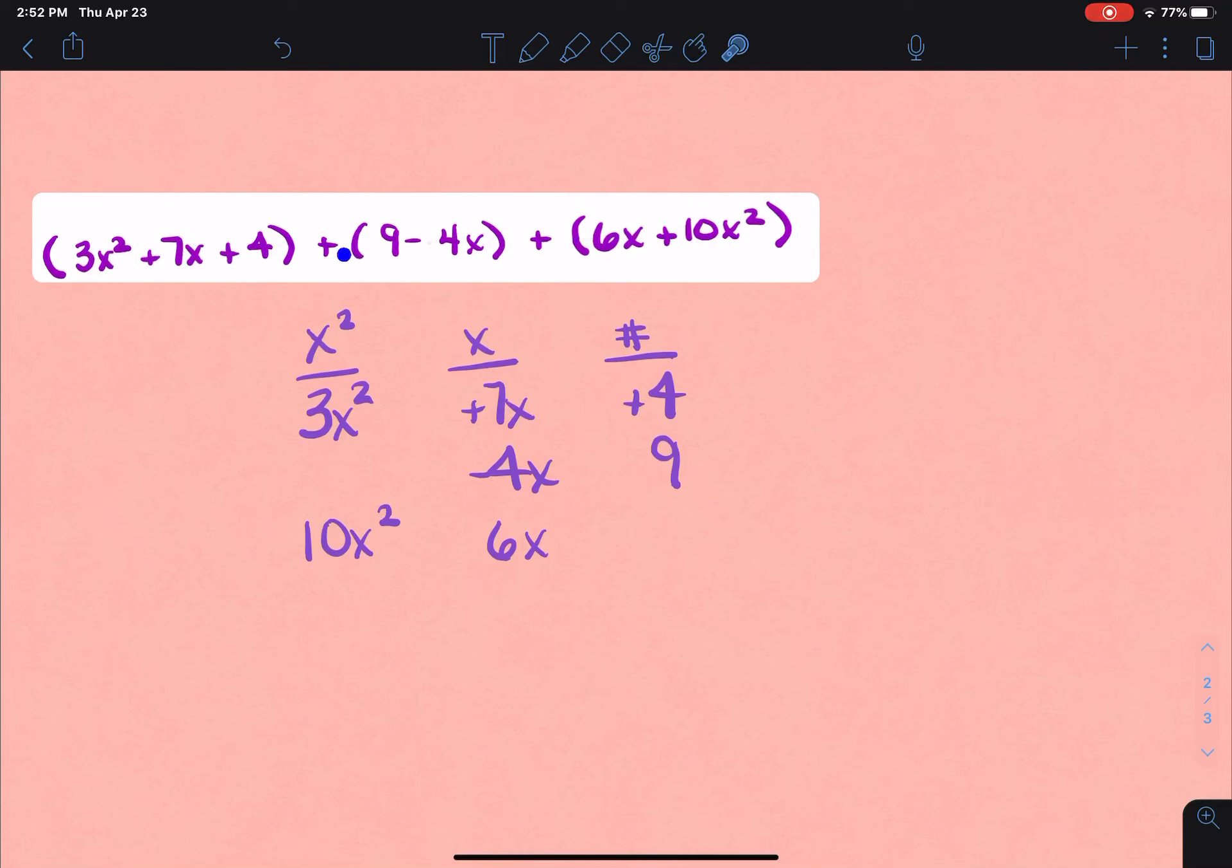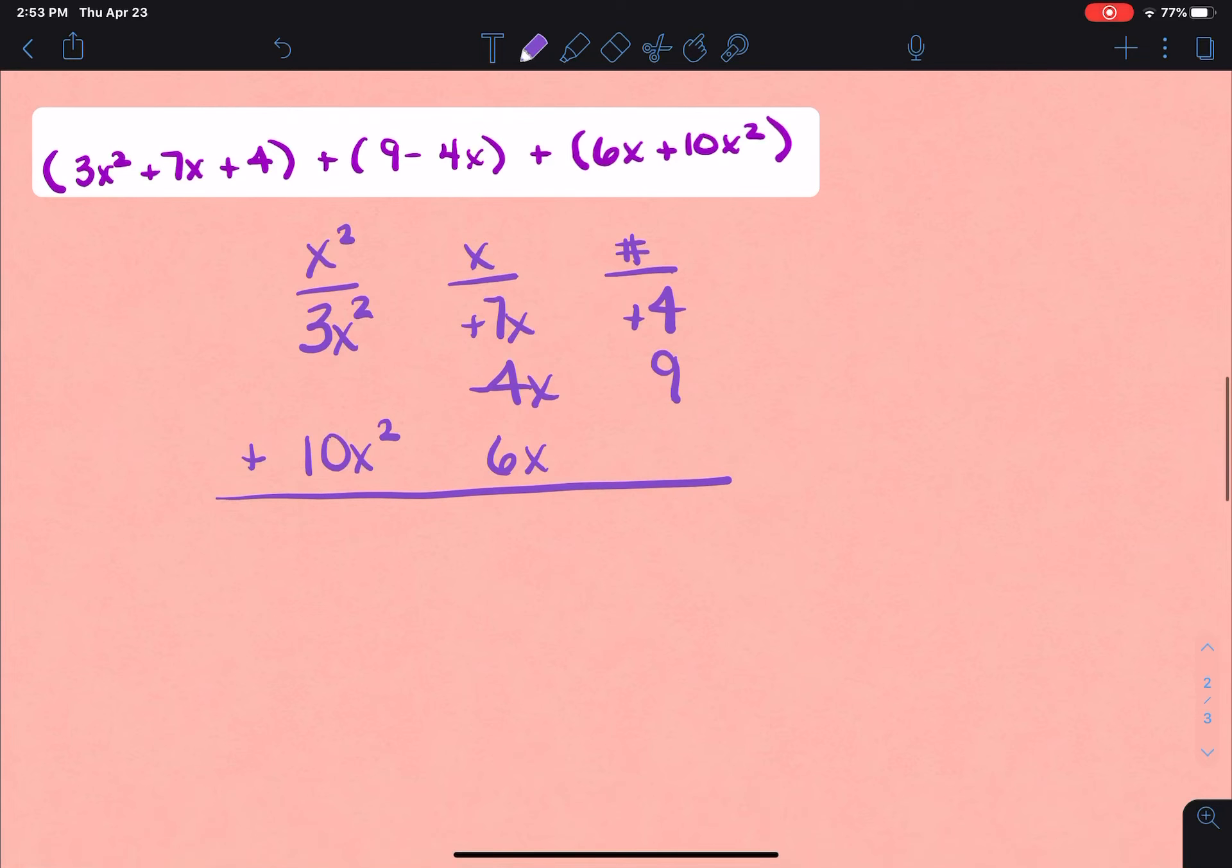Now once these are all sorted down here, you can do your plus sign and draw your line. So 13x². Now when I go to this next one, I have a mixture of positives and negatives. So 7 and negative 4 is 3, plus 6 is going to be 9. So 9x, and since it's positive, I'm going to write plus. Last column here, 4 plus 9 is going to be 13.